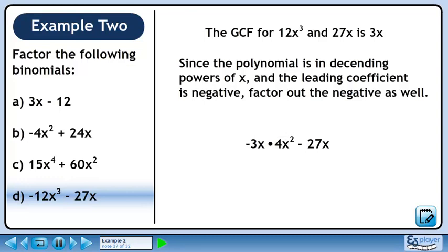We write 12x cubed as 3x times 4x squared. We write 27x as 3x times 9. If we rewrite the minus as a plus and a minus, we'll be able to attach the minus to the 3x in the second term. Pull out minus 3x from both terms. Collect what's remaining in a set of brackets. The answer is minus 3x times 4x squared plus 9.